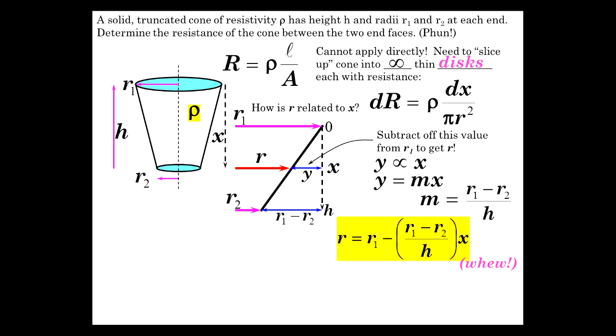So m is r1 minus r2 over h. And so R now is r1 minus y, where y is mx. And so there's minus mx. So there's our value of R in terms of r1, in terms of r2, h, and x.